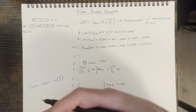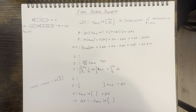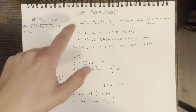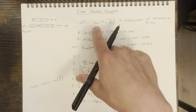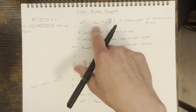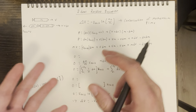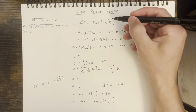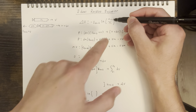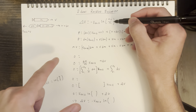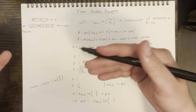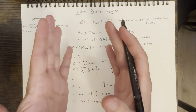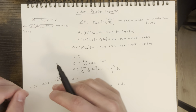Today we're going to be walking through the derivation of the ideal rocket equation. Essentially, the ideal rocket equation relates the change in velocity to our effective exhaust velocity and the natural logarithm of our final mass over our initial mass. The reason we need to do this is because our mass is changing as our rocket is flying through time.